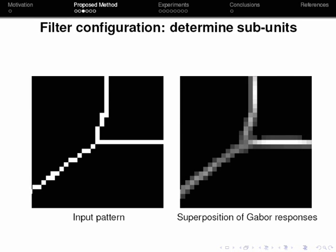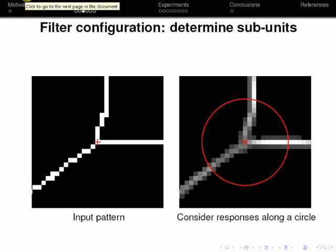We then superimpose the responses that are achieved from the bank of Gabor filters and consider only those responses along a circle of a given radius as illustrated by the red circle.